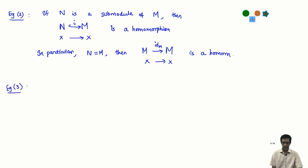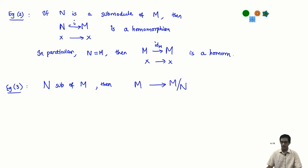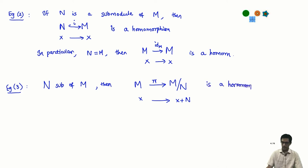Example three: if N is a submodule of M, consider the quotient M/N — the set of all cosets of N in M. From M to the quotient, we have the projection map π, which takes each element X of M to its corresponding coset X + N. This projection map is a homomorphism. Let us check quickly: π(X + Y) = (X + Y) + N, which is exactly how addition is defined in the quotient module.